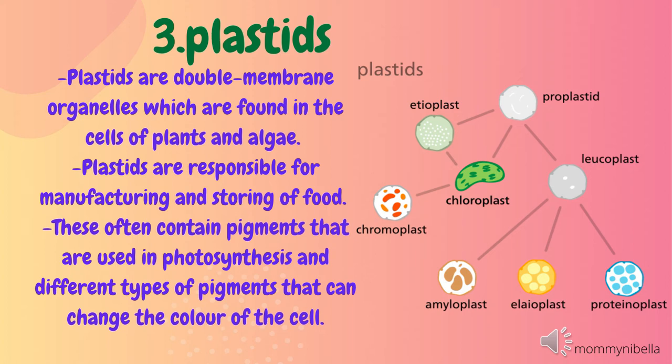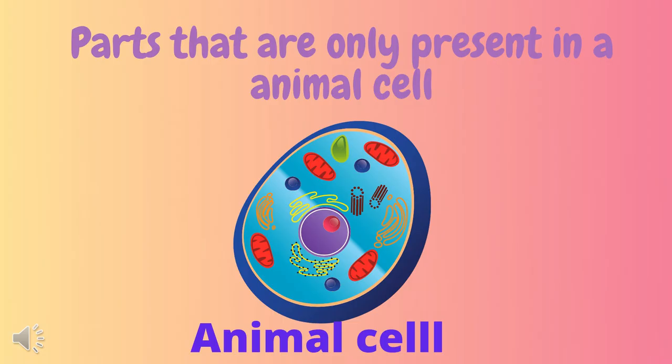Number three: plastids. Plastids are double-membrane organelles found in the cells of plants and algae. Plastids are responsible for manufacturing and storing food. They often contain pigments used in photosynthesis and different types of pigments that can change the color of the cell.